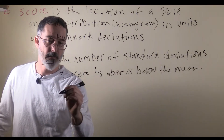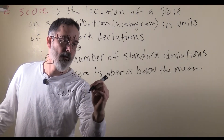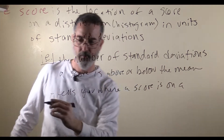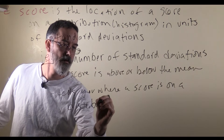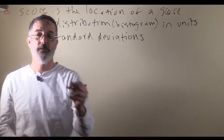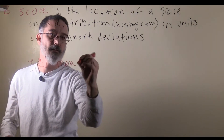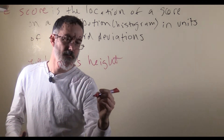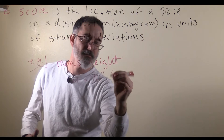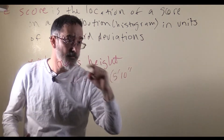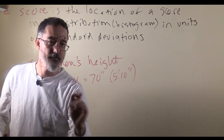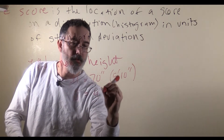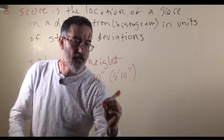A z-score tells you where a score is on a distribution. For example, consider men's heights. We know quite a bit about them. The population mean for men's heights is 70 inches, which is the same as 5 foot 10 inches. The population standard deviation for American men's heights is 4 inches, and it is a normally shaped distribution.